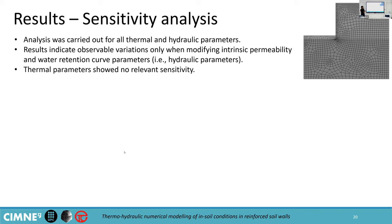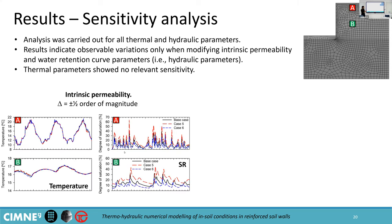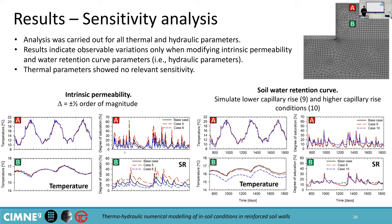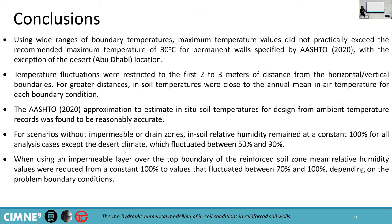We did a sensitivity analysis over thermal and hydraulic parameters for each soil, and we found out that most variations come when varying hydraulic parameters — thermal parameters don't have a significant impact over the system response. Two specific parameters stand out: the intrinsic permeability, which has the most impact over the soil saturation particularly as depth increases and the influence of boundary conditions is lower; and the soil water retention curve parameters, which increase or decrease the volumetric water content of the soil, which in turn has a visual impact on the soil temperature.